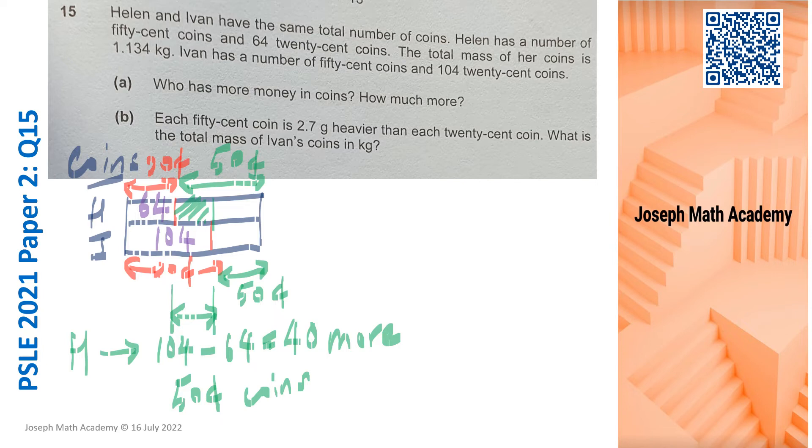So the value of each coin, each type of coin - one 50 cent coin and one 20 cent coin, the difference in value is 30 cents. So from here I can know part A, who has more money in coins and how much more. The one that has more money in coins is definitely Helen because she has more 50 cent coins. So she should have more money than Ivan.